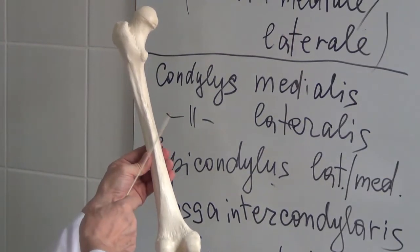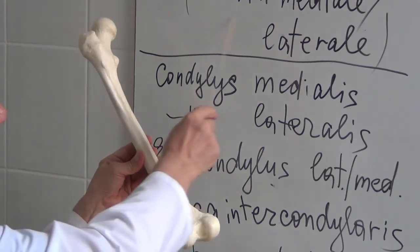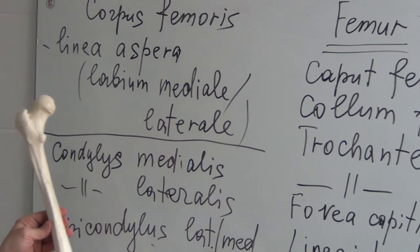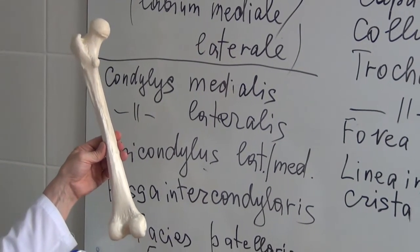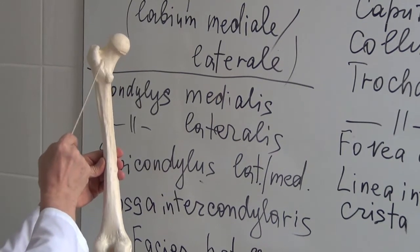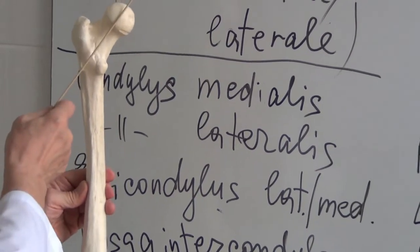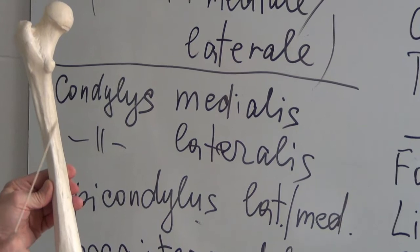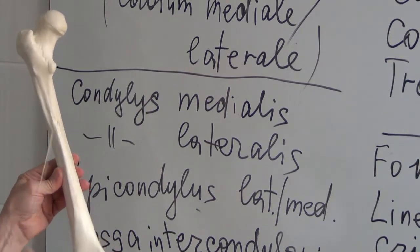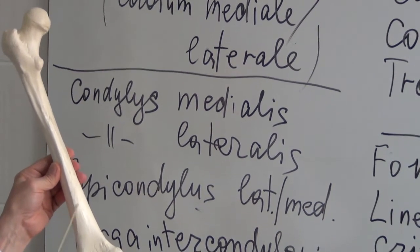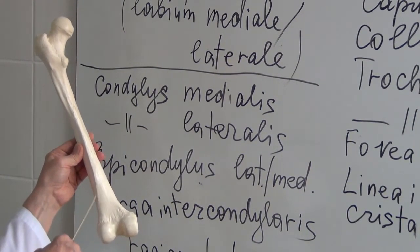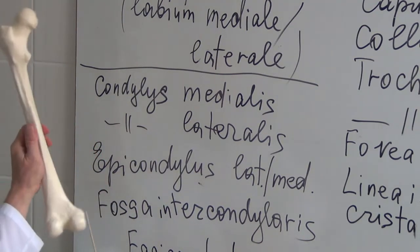The linea aspera consists of two labia: the labium mediale and the labium laterale. To distinguish between them — since the caput femoris and collum femoris are oriented medially, that side is the labium mediale, and the other side is the labium laterale. On the distal epiphysis they diverge laterally and medially.